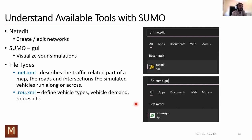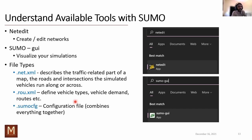The .rou.xml (route) file defines vehicle types. In basic form you can define the color, acceleration rate, deceleration rate, which car-following model is used, and what lane-change model parameters apply. There are default parameters so you don't need to know everything to start. This is where the vehicle demand goes — the things that are moving in the simulation.